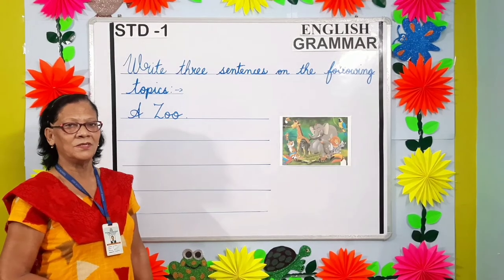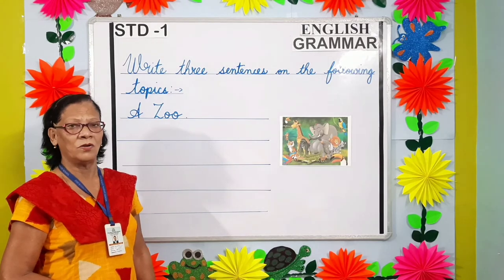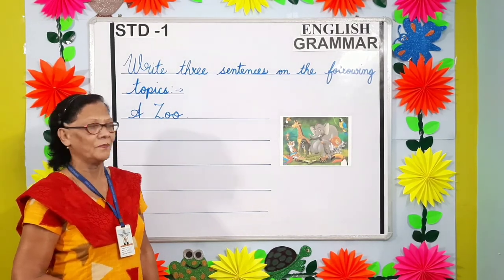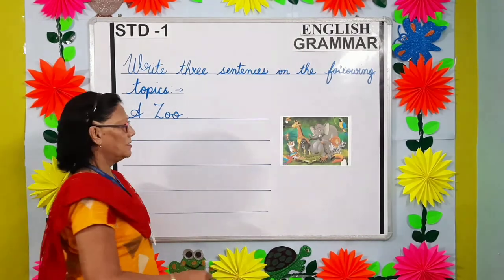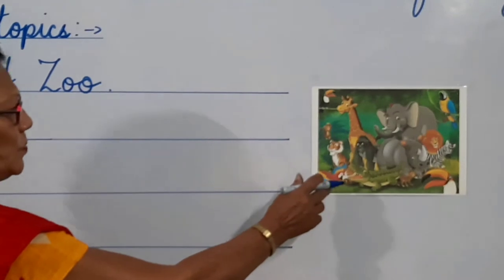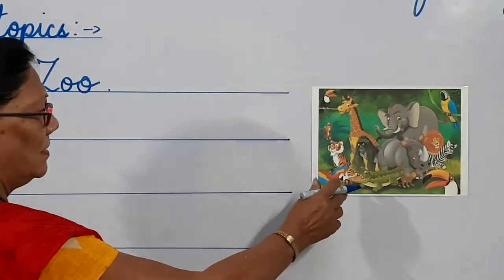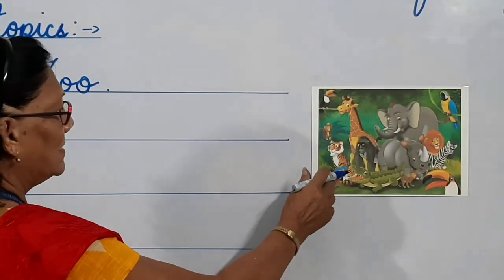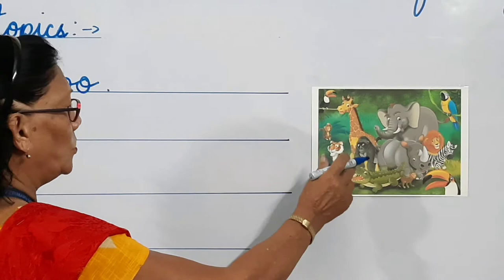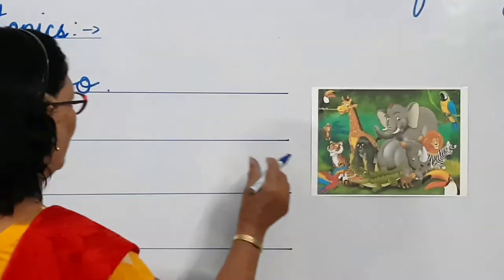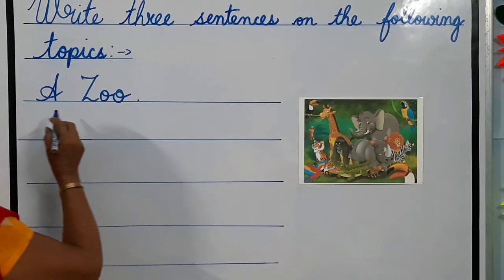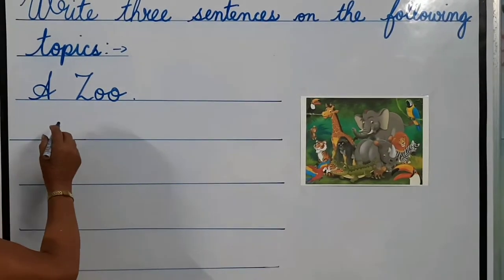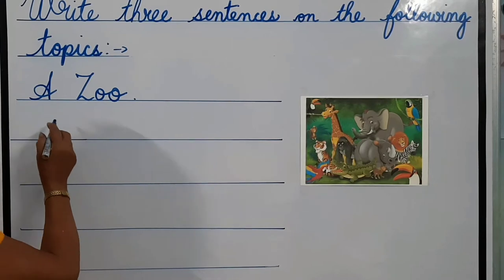Now students, moving on to the last topic. Students, can you all recognize this picture? It is the picture of a zoo. Now we will write three sentences about a zoo.